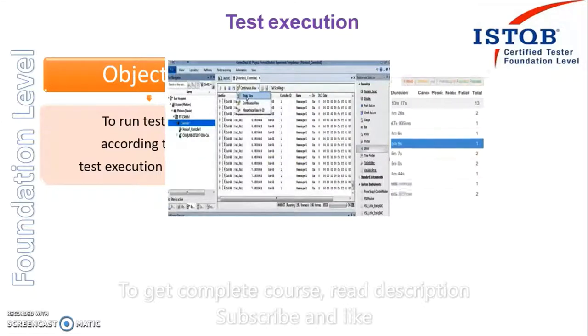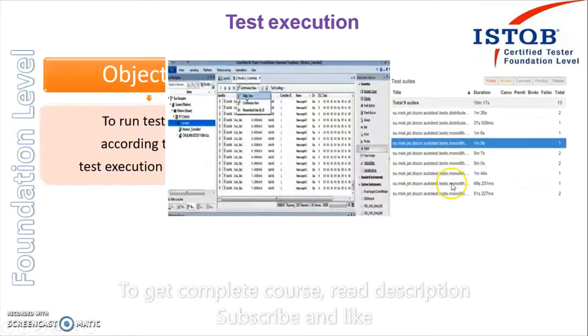You have just given the script, and now what you see is for how much time the script has run, how many tests have failed, how many tests are broken - meaning those test cases which could not complete themselves - how many test cases we cancelled, how many test cases are still pending to execute, and how many test cases are passed.